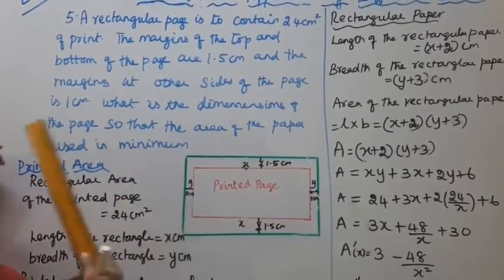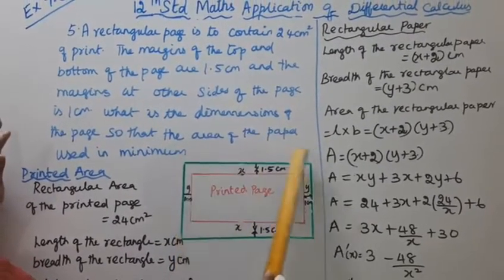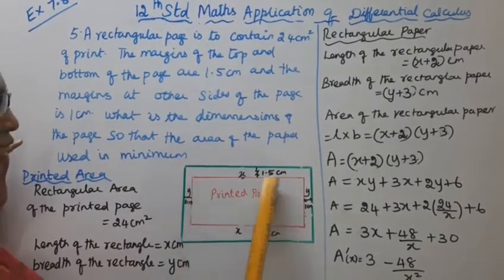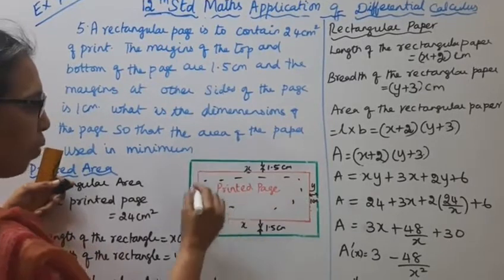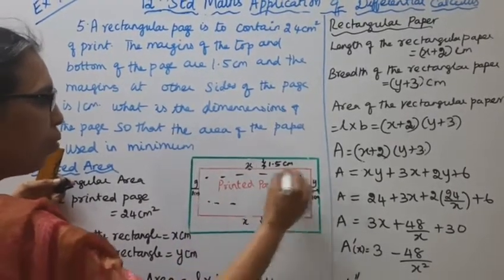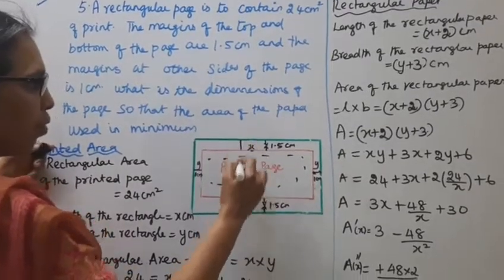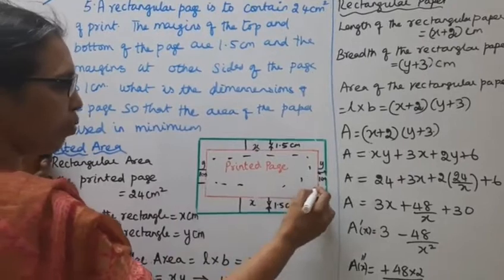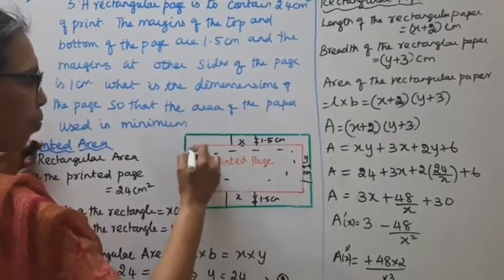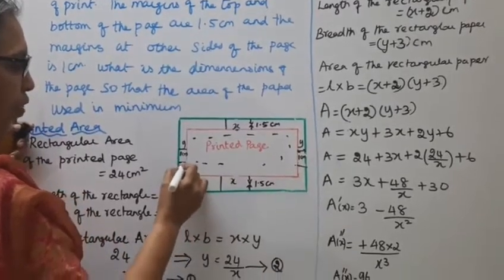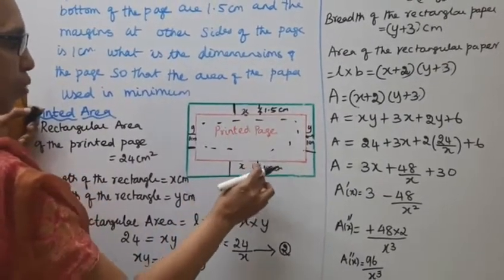So we have a rectangular paper, and inside the rectangular paper there is a rectangular printed page. The top and bottom margins are 1.5 cm each.